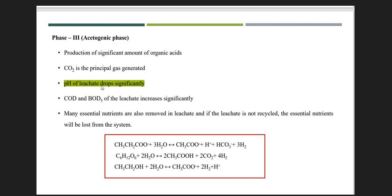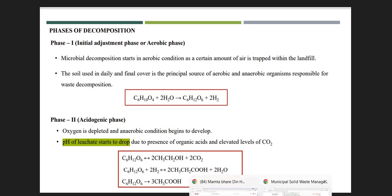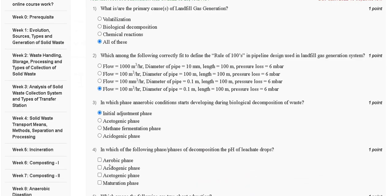The pH of leachate drops significantly in the acetogenic phase, and the pH of leachate starts to drop in the acidogenic phase. So the correct answer for question number four is option B — acetogenic phase and acidogenic phase.